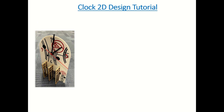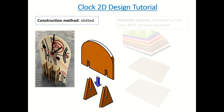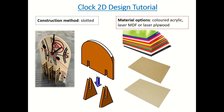The construction method we're using is the slotted technique, where you have one piece of material slot into another. The material options are acrylic, laser MDF, or laser plywood. A note on thickness: these are mostly three millimeters thick, and that's important because it determines the size of the gap for it to fit accurately.